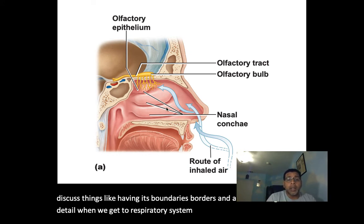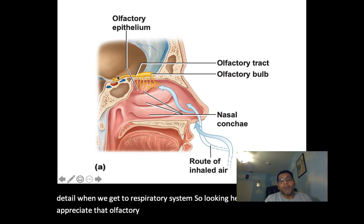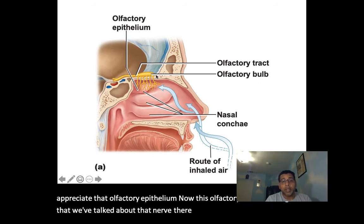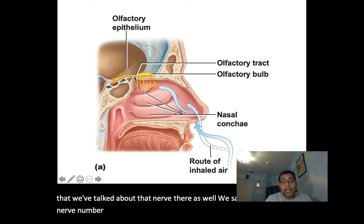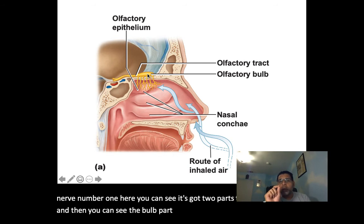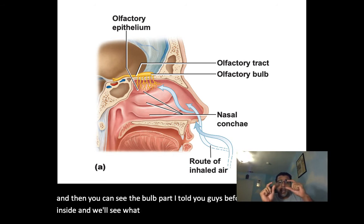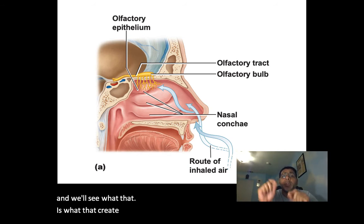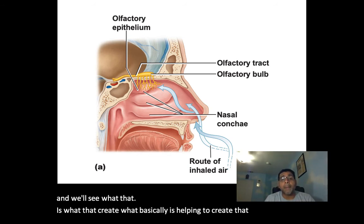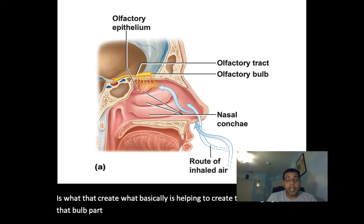Looking here, you can appreciate the olfactory epithelium. The olfactory nerve — cranial nerve number one — has two parts to it: a tract and a bulb. We'll look at the inside to see what creates that bulging bulb part of the nerve.